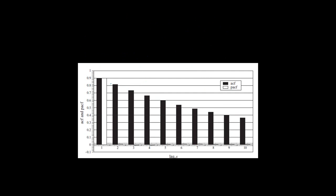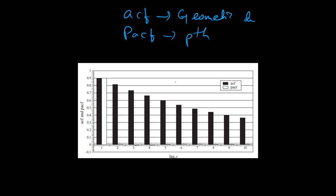In this case, you can see the black bar is actually geometrically declining, so the ACF is following a geometric decay. Whereas the PACF is significant only till the first lag — the Pth lag. So PACF is significant till the Pth lag. If we go by the rules defined in the first slide, it is an AR process. In particular, this is an AR(1) process because only the first lag is significant.